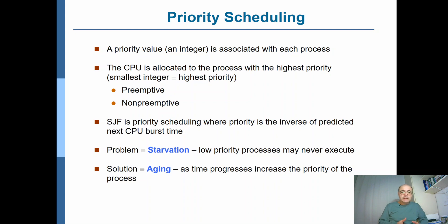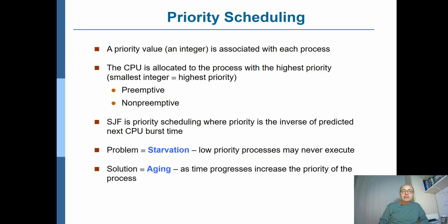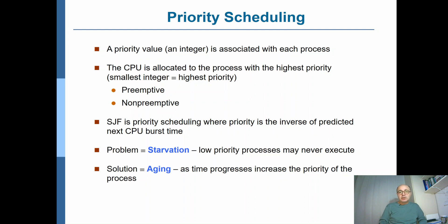The solution to starvation is aging. When a process remains in the system for a long time, it gets older — it ages. You define priority based on the time a process has been waiting, so as time progresses, the priorities of waiting processes are incremented. Although they may start with low priority, they will get higher and higher priority over time and eventually get the chance to go to the CPU.